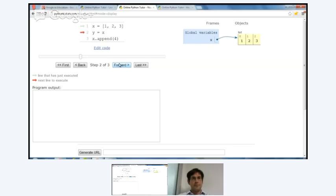So when you step forward and you execute the first line, you see that there's a global variable x, which has an arrow that points to a list of 1, 2, 3. And this is exactly what I drew on the whiteboard. And when you execute the second line, it draws another variable y and points it to the same 1, 2, 3. And when you execute the third line, the program finishes and it appends 4 to that list.